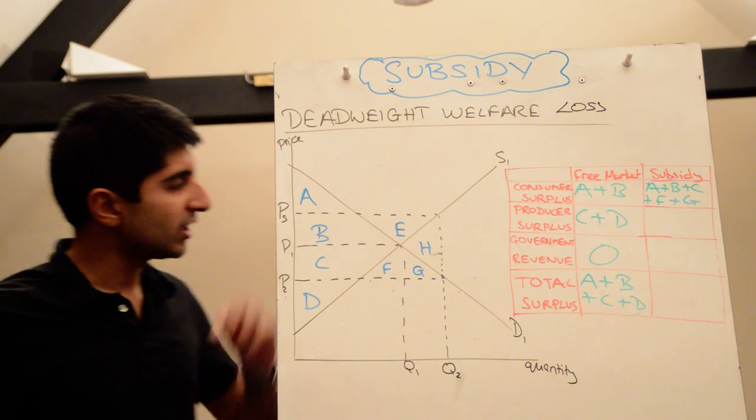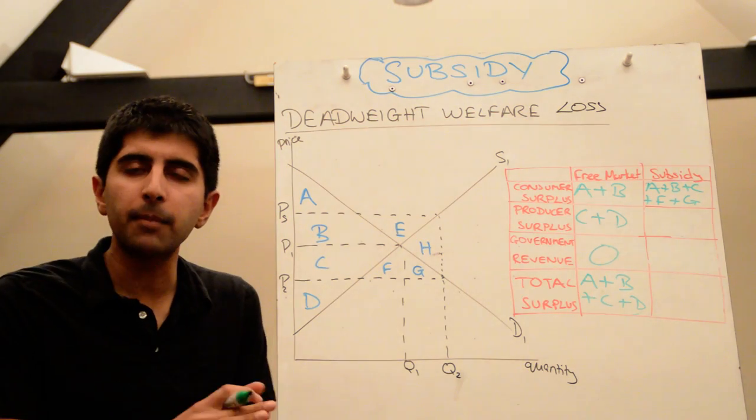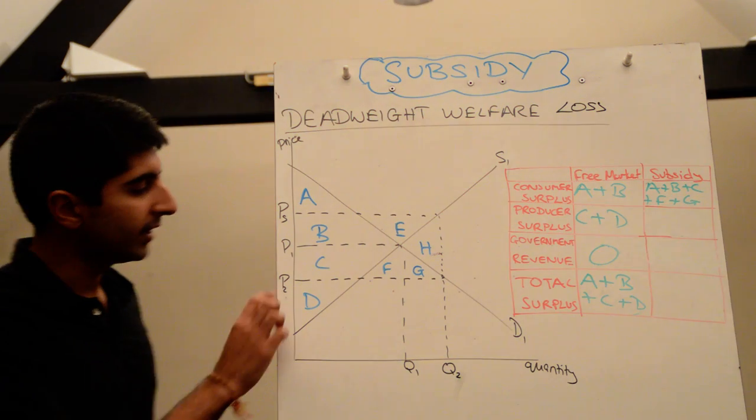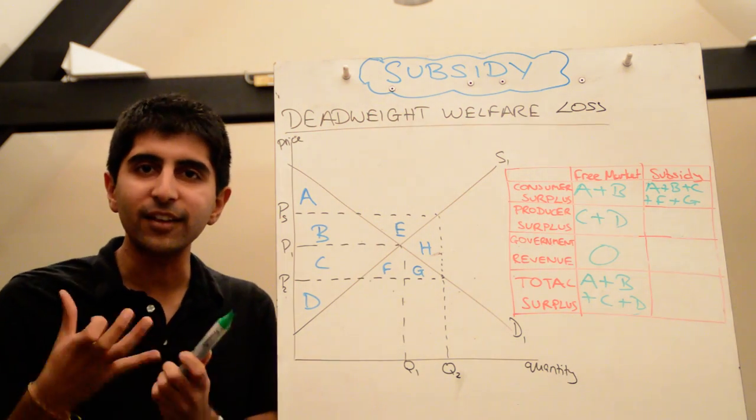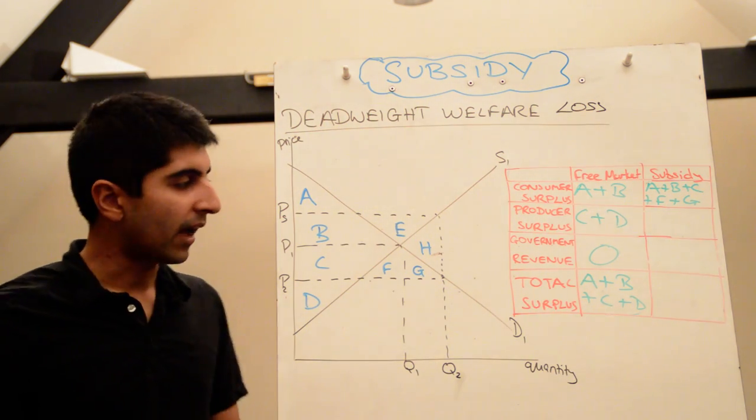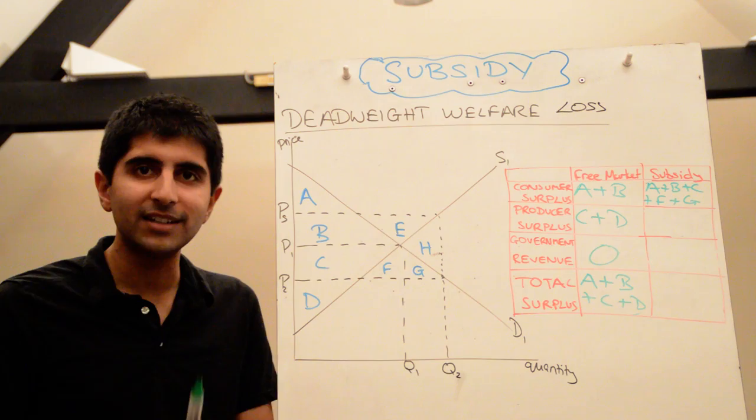The producers now are actually gaining producer surplus. So remember what we said in my previous video on subsidy. We said, yes, okay, the producers are charging consumers the price P2. But on top of that, they're getting a subsidy from the government. And that's adding to their revenues. That's adding to their surpluses.